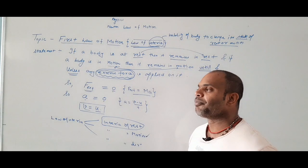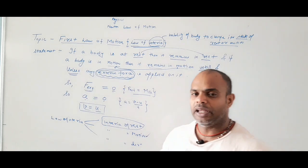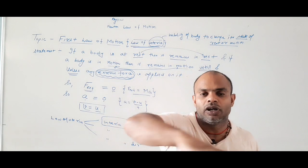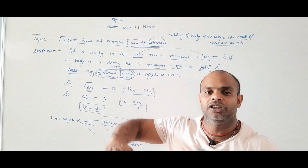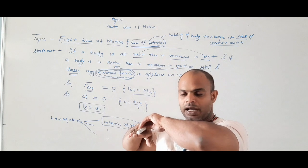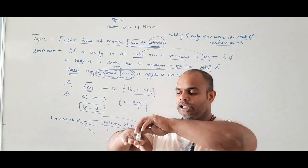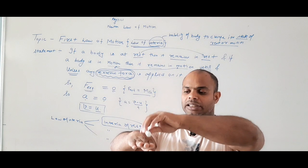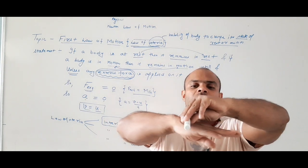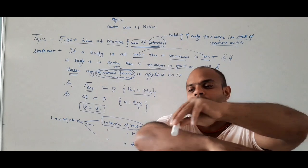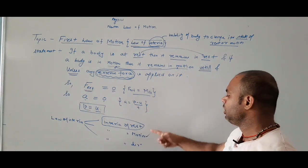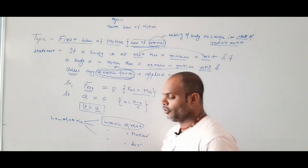Another example is inertia of direction. If you are driving in a car at high speed and suddenly a U-turn comes, the car turns but you tend to go straight — you will move sideways from the seat. This is the example of inertia of direction. So these are the three examples of the law of inertia.